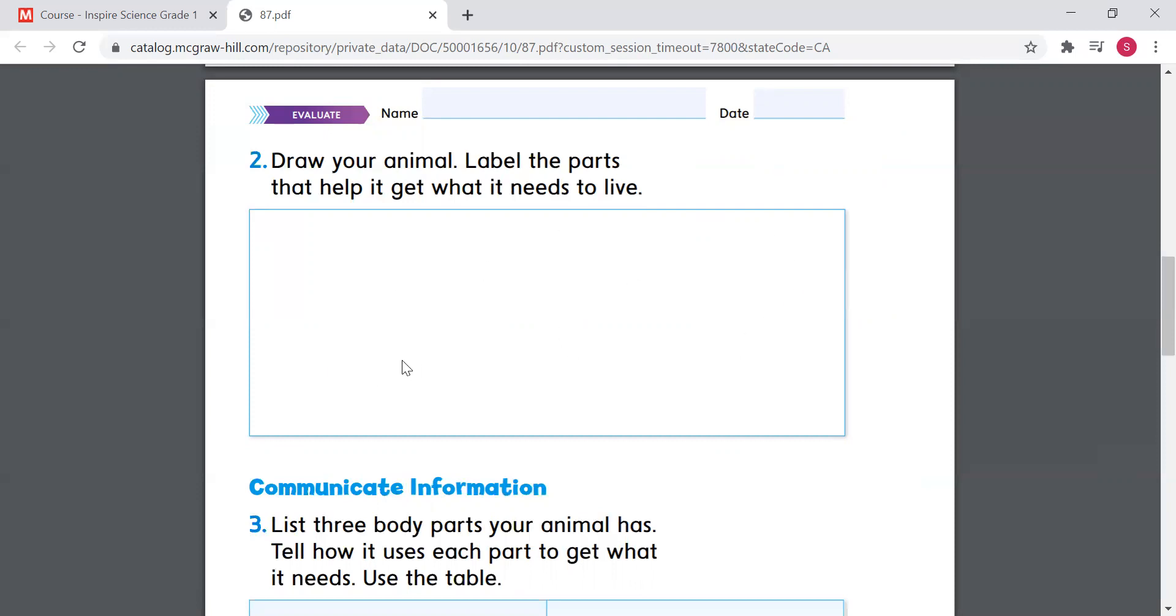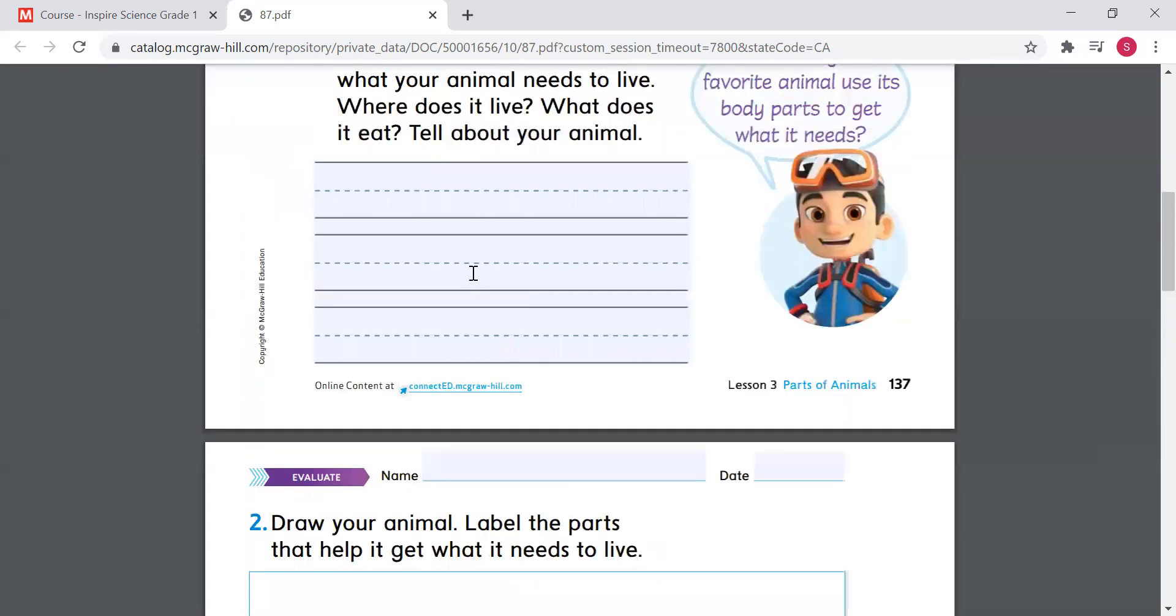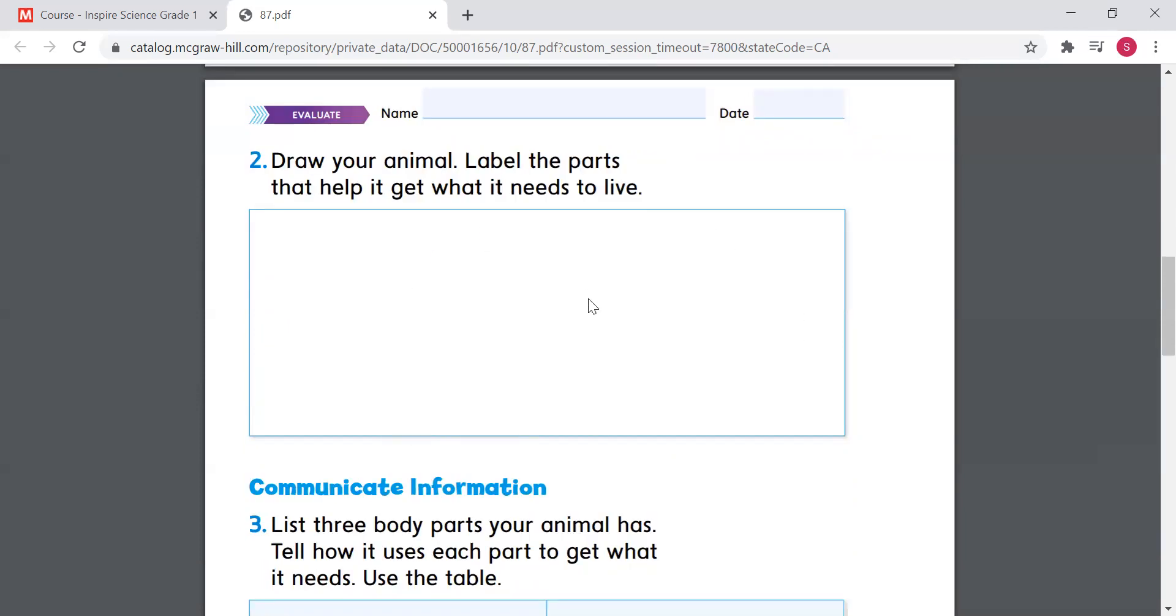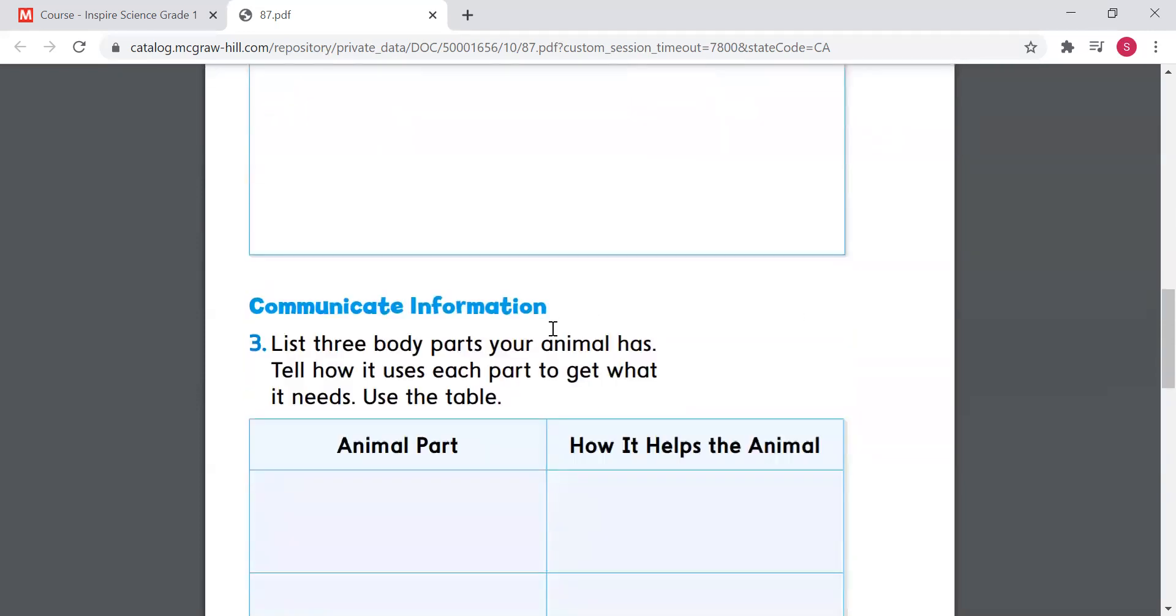So I can draw my dolphin and do this. For example, if you decide to draw a cat, so you would be pointing or labeling the hands and legs that help the cat to run. You will point to the mouth that helps the cat to eat, and the nose helps to breathe. The eyes help the animal to see. So this is if you choose a cat. So it's up to you which animal you chose on page 137. You're gonna draw it in this box.